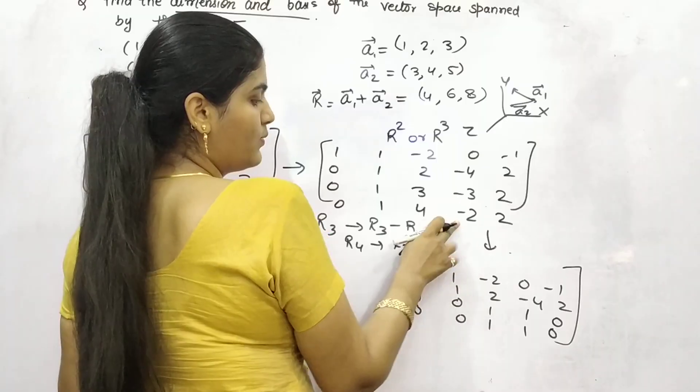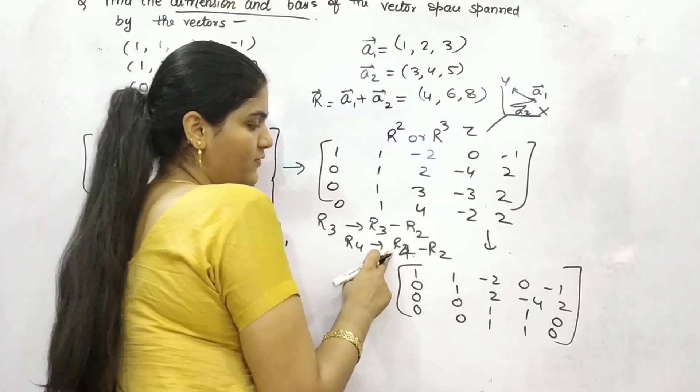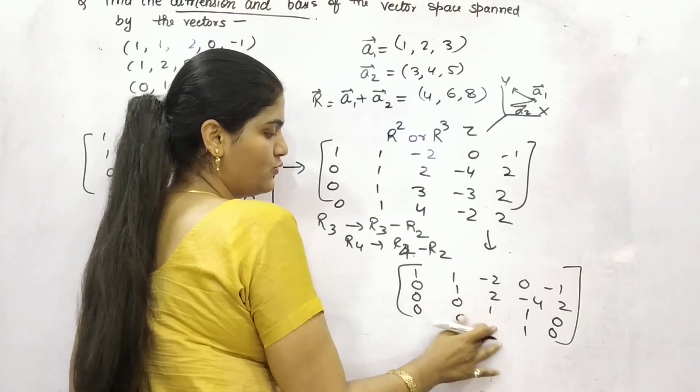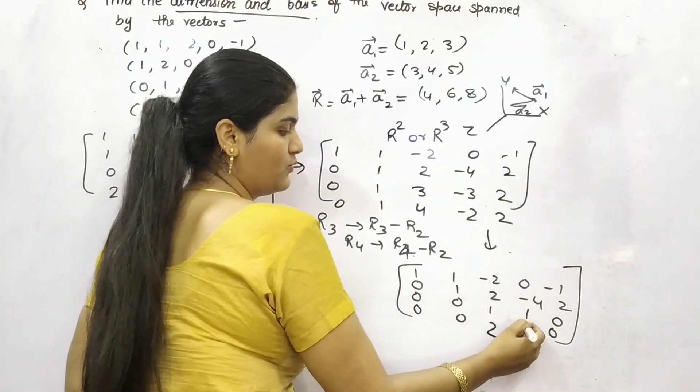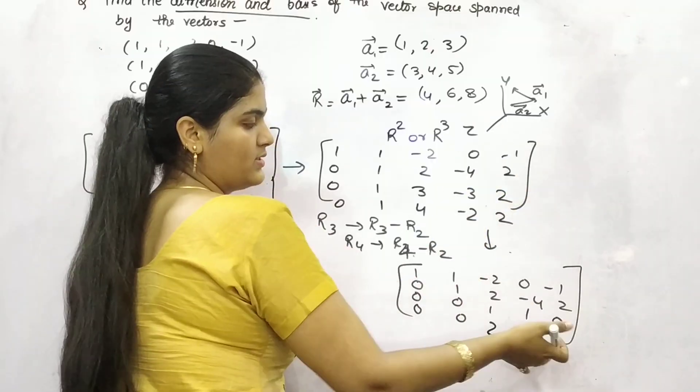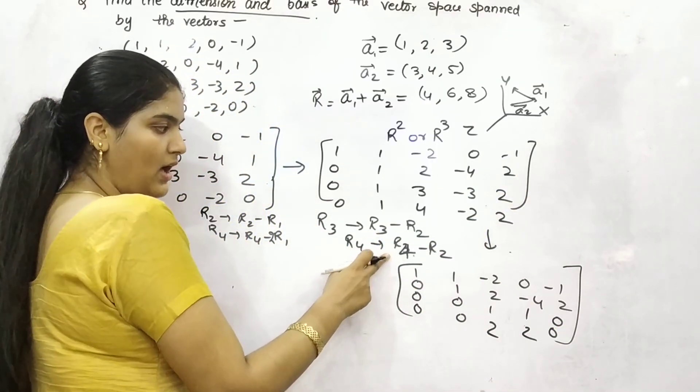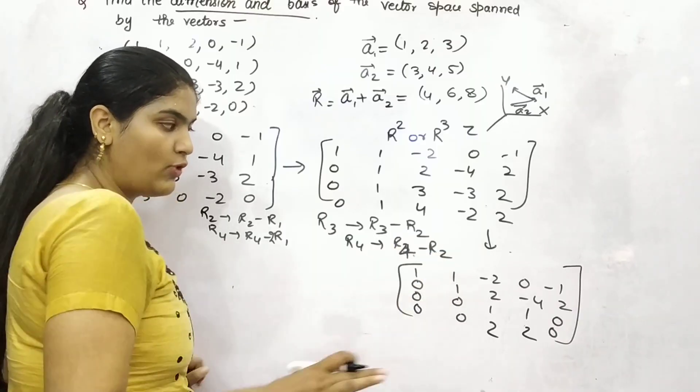Oh, I'm really sorry, we have to do it from R4 and R2, right? 1 minus 1, 0, 4 minus 2 is 2, minus 2 plus 4 is 2, 2 minus 2 is 0. Initially, I applied with R4 and R3, right? But the operation is R4 minus R2, so this is what you have got.